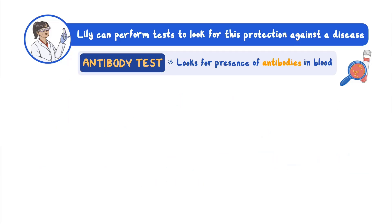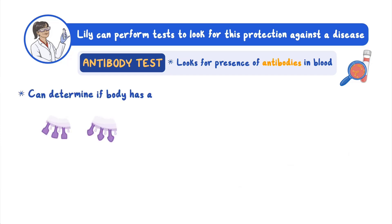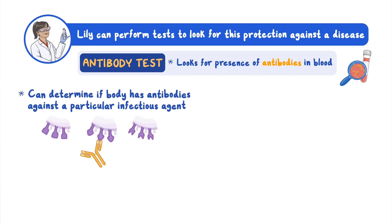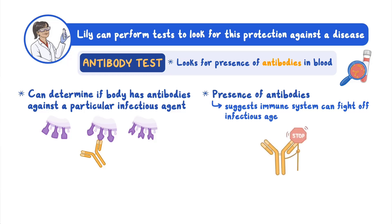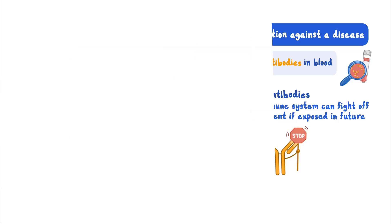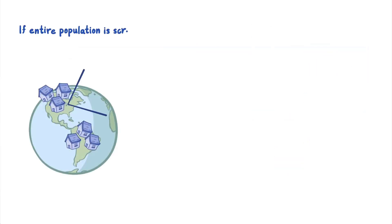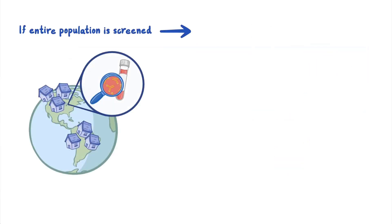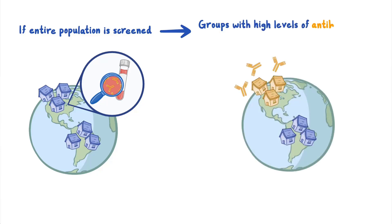An antibody test can determine if a person has antibodies against a particular infectious agent. For many infectious diseases, the presence of antibodies suggests that an individual's immune system can fight off that infectious agent if exposed in the future. If an entire population is screened using antibody tests, groups with relatively high levels of antibodies suggest a high incidence of infection at some time in the past.